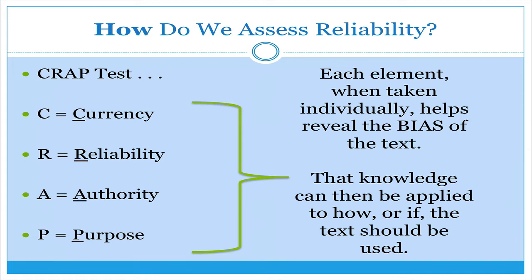So how do we assess the reliability of texts? We're going to use the CRAAP test. It's not a lovely name, but here's what it stands for. We're going to look at each text and assess its currency, its reliability, its authority, and its purpose to help us better understand what is its bias, and then how does its bias either help us or hurt us with our paper or project because it is too biased, too slanted, or too favoring one side over the other.